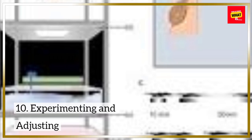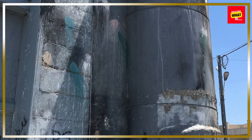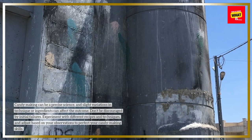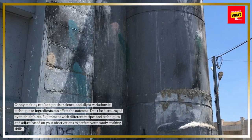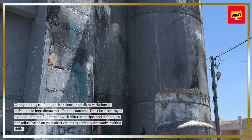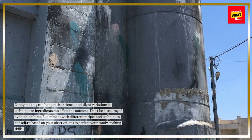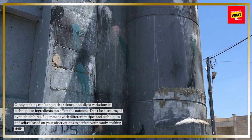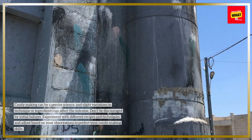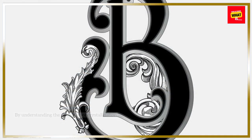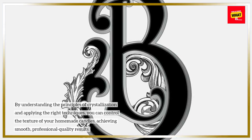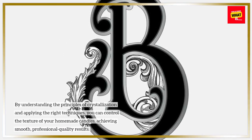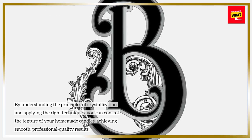Experimenting and Adjusting: Candymaking can be a precise science, and slight variations in technique or ingredients can affect the outcome. Don't be discouraged by initial failures — experiment with different recipes and techniques and adjust based on your observations. By understanding the principles of crystallization and applying the right techniques, you can control the texture of your homemade candies, achieving smooth, professional-quality results.